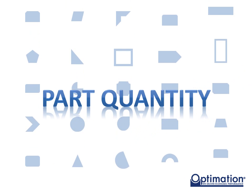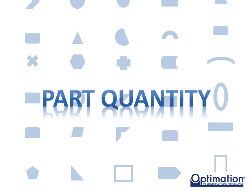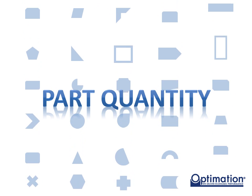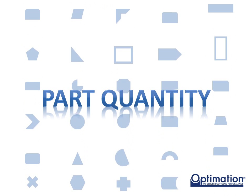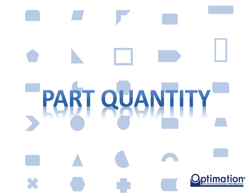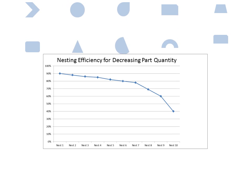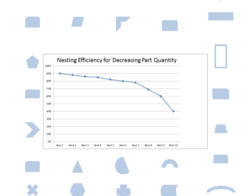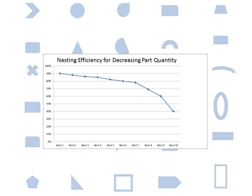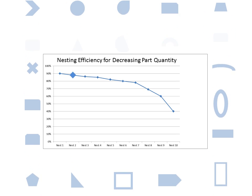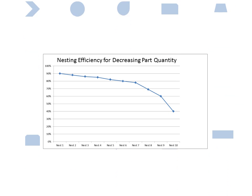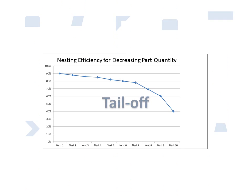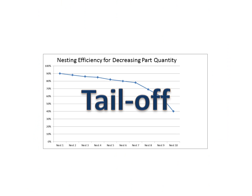Another important factor that influences material efficiency is the quantity and variety of parts to be nested. The larger the number of available parts, the higher the likelihood that the nest will have a high material efficiency. This must be balanced against keeping to a production schedule. All nesting systems will produce less efficient nests as the quantity of parts available decreases. If nests are run until no more parts exist, the efficiency of each nest will decrease until finally the last plate is only partially filled. This process is called tail-off. The only way to combat this effect is to keep the quantity of parts available to the nesting system high.